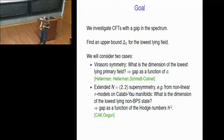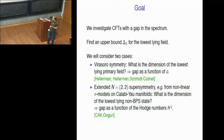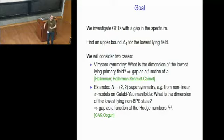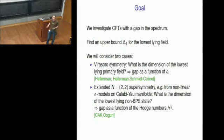The second type of model that we will look at are N=(2,2) supersymmetric conformal field theories. The motivation, as I said before, is we want to think of them as coming from Calabi-Yau compactifications. The precise question we are asking is: what is the dimension of the lowest-lying non-BPS state in this theory? Between Calabi-Yau's and those sigma models, there's a relation between essentially the topology of the Calabi-Yau and the BPS states, which means that we know a lot about BPS states, but in general very little is known about non-BPS states. And those non-BPS states would be related to the geometry of the Calabi-Yau, so we are trying to extract some information on them.